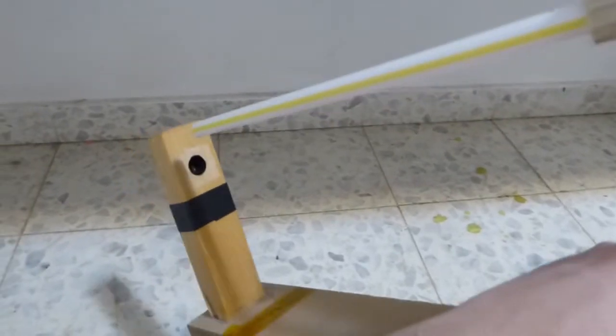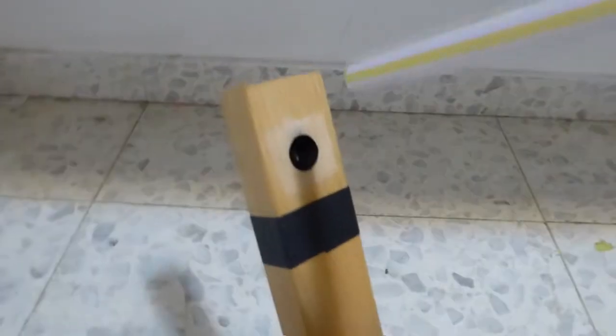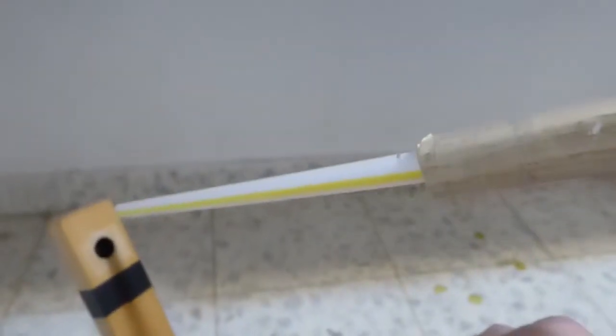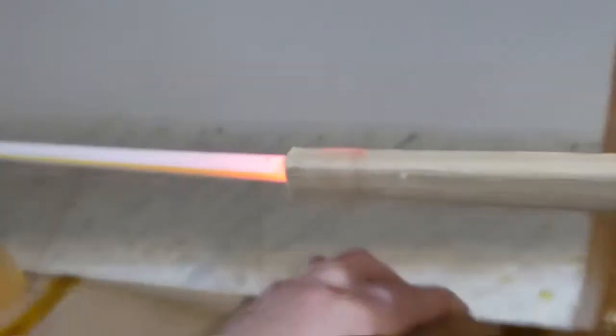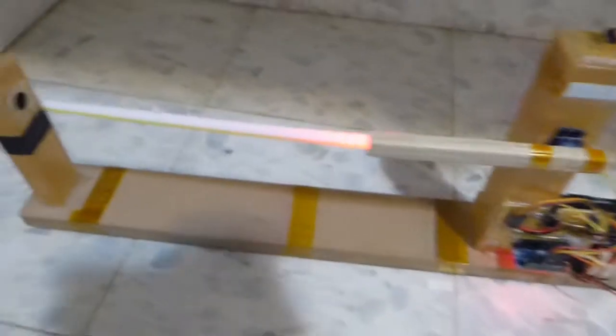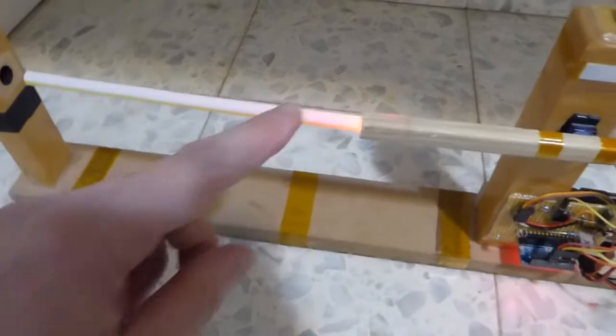There. I pointed the sensor, the light-dependent resistor that's in here, to the light in the room, so it turns off the decoration light. But when I put it somewhere dark, it senses that there's not much light around, and turns it on.